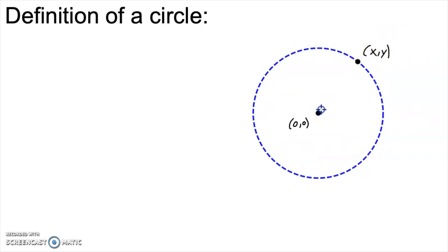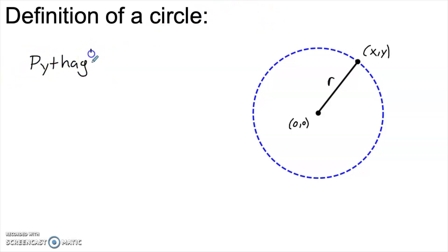If I connect the center of the circle to any point on the circle, I get the radius. Here's the first really interesting surprise: the last thing you would think about when deriving the equation of a circle would be a triangle. But we come up with the equation using right triangles — and if you think about it, that makes sense, because we measure distance in the coordinate plane with Pythagoras.